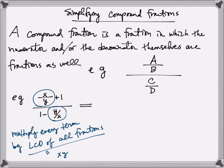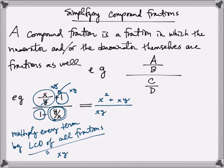We're going to multiply every single term in our compound fraction by x times y. For the first term, the y cancels, leaving x on top times an extra x, giving me x squared. Multiplying the second term times x times y gives simply xy. Connect those two terms with a plus sign. Dividing: when I multiply the 1 by xy I get xy, and for the second expression, multiplying by xy causes the x to cancel, leaving y squared. Connect those with a subtraction sign, then simplify.